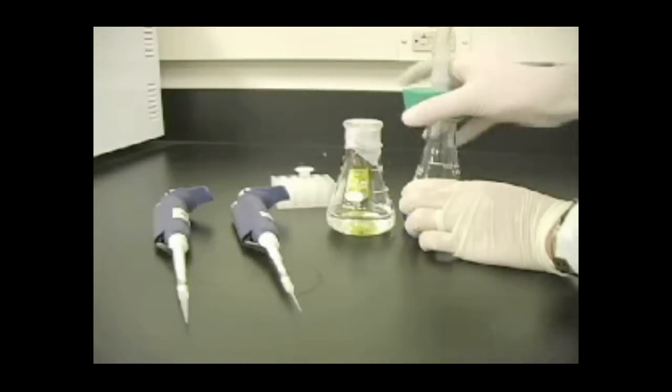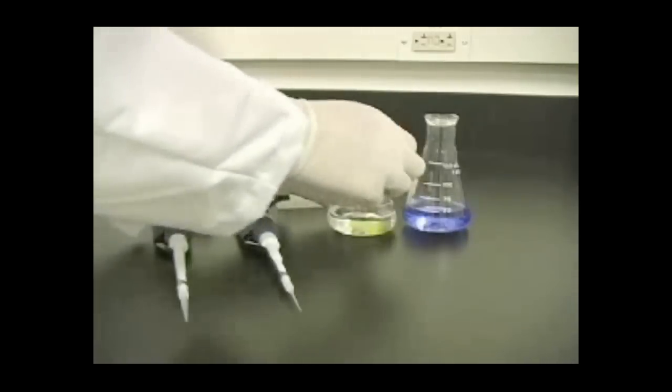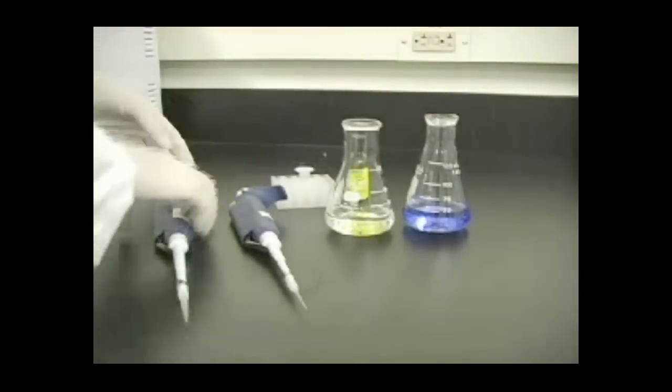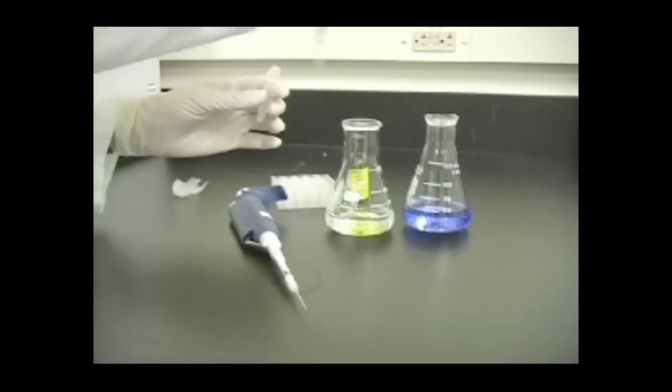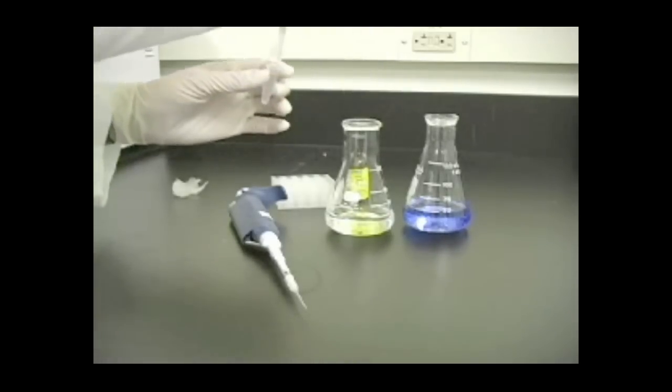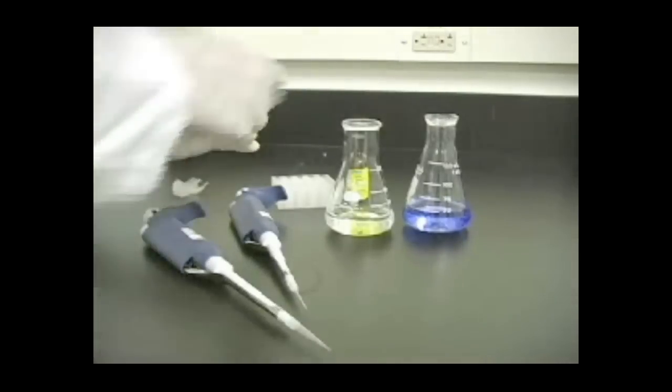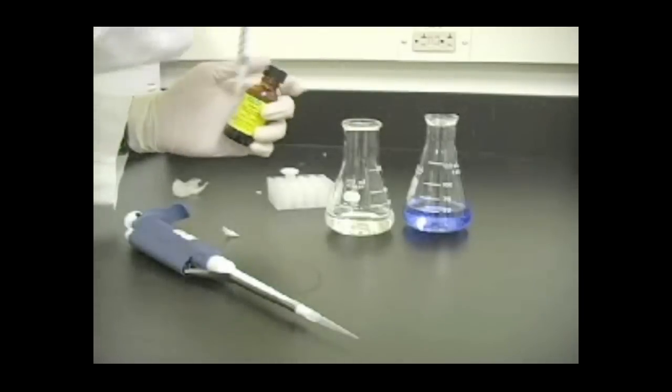Add APS and TEMED to your degassed light and heavy monomer solutions at this point. Monomer solutions should be made according to the gradient gel percentages desired and amount of solution required. Please see your manual for detailed recipes. In this video, we have artificially colored the heavy solution blue so that you will be able to see the gradient forming. Be aware that your heavy solution should not be blue.